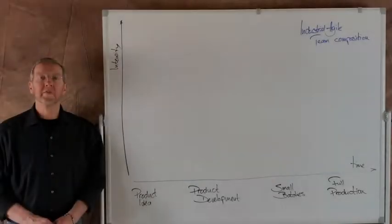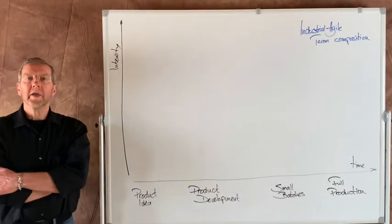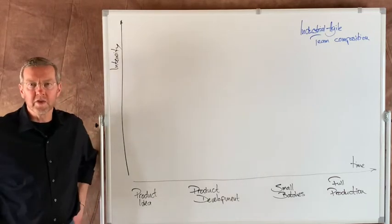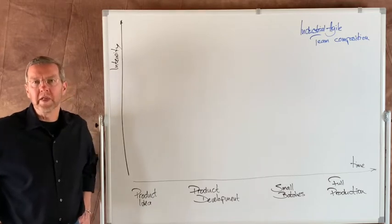Welcome back to the next video in the series on Industrial Agile, talking about manufacturing problems, product problems that are discovered only when full production is running.